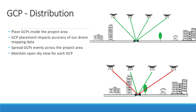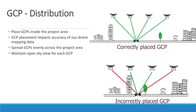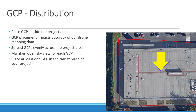Each GCP should have an open sky view. This means that GCPs should be placed far away from trees, buildings, fences, cars, road signs and other objects. If possible, have at least one GCP in the tallest place of your project.